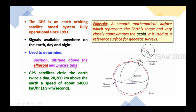What is an ellipsoid? An ellipsoid is a smooth mathematical surface which represents the Earth's shape and very closely approximates the geode. So we can determine position, altitude, and time above the ellipsoid — that is, above the Earth's surface. GPS satellites circle the Earth twice a day. They are placed at an altitude of 20,200 kilometers, and the velocity of these satellites is 3.9 kilometers per second.